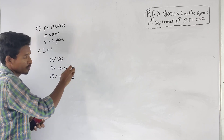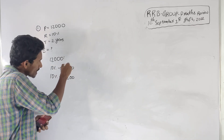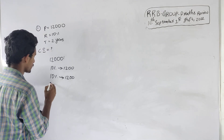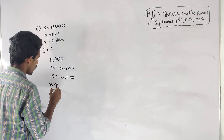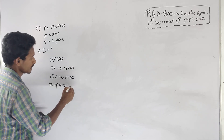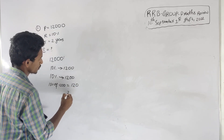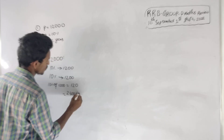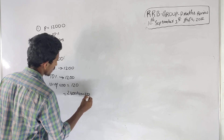For compound interest, the amount of interest in the first year is 10% of 12,000, which is 1200. In the second year, 10% of 1200 is 120. So 2400 plus 120 is equal to 2520.